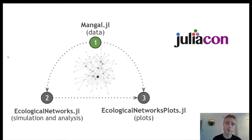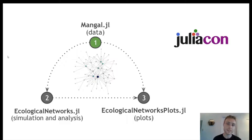Mangal is used to query data on species interaction networks archived on the Mangal API. Ecological Networks can be used to simulate networks under a specified set of hypotheses and provides functions to compute all metrics commonly used by ecologists to analyze ecological networks. Finally, Ecological Networks Plots allows you to visualize these networks. Together, these packages provide a valuable methodological framework for the study of ecological networks in Julia.